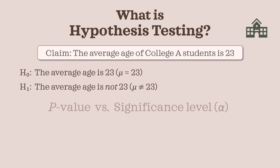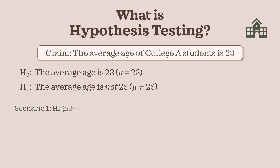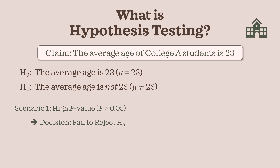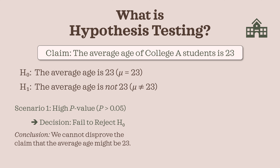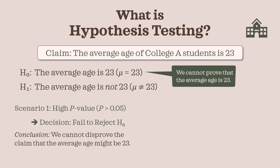There are two possible scenarios we face. Scenario 1: a high p-value, that is, a p-value greater than 0.05. This means the evidence — our sample — is consistent with the null hypothesis claim. Our decision would be to fail to reject the null hypothesis. We then conclude that we cannot disprove the claim that the average age might be 23. Note that we don't actually have a true way of proving that the average age is 23. We can only conclude that we cannot disprove the claim because we don't have sufficient evidence.